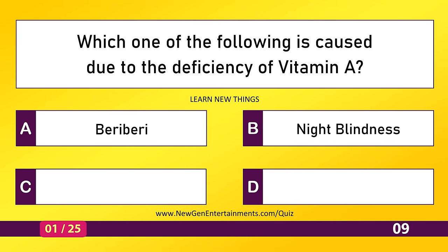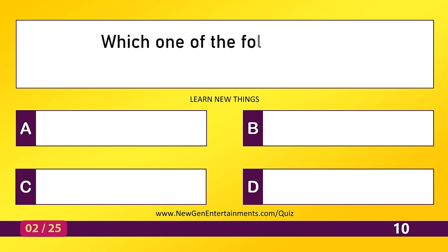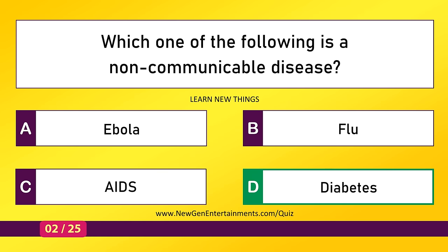Which one of the following is caused due to the deficiency of vitamin A? Night blindness. Which one of the following is a non-communicable disease? Diabetes.